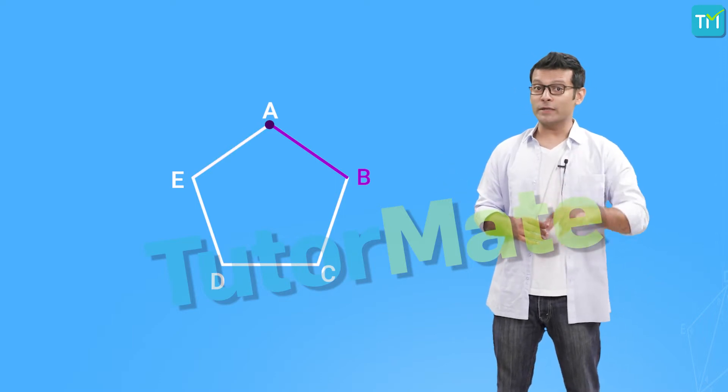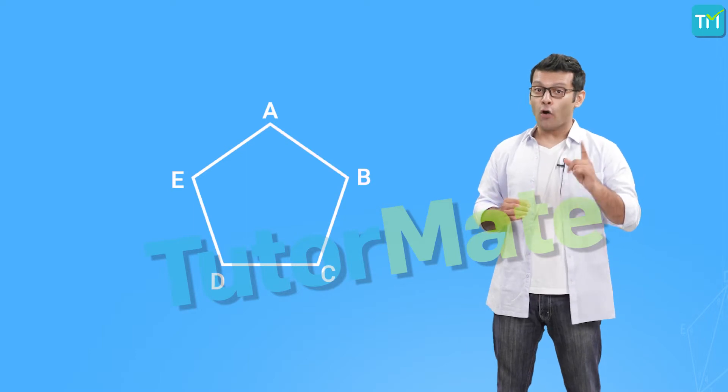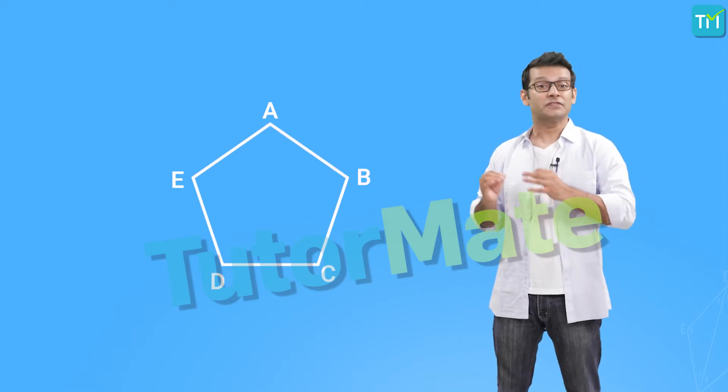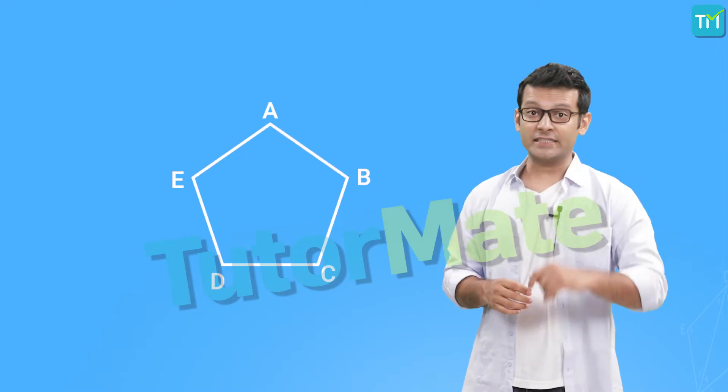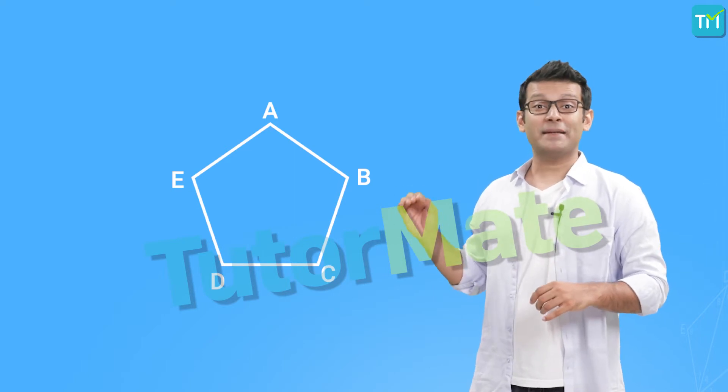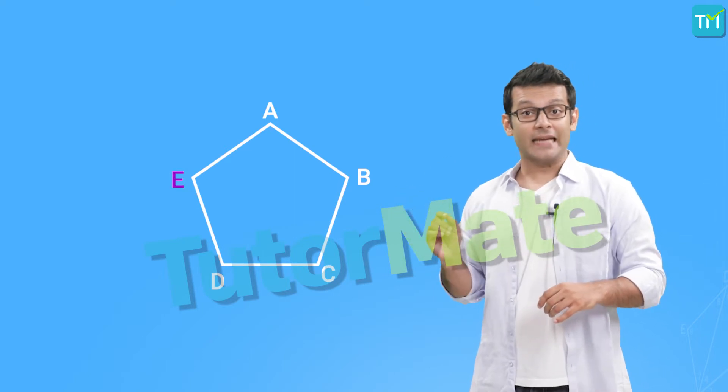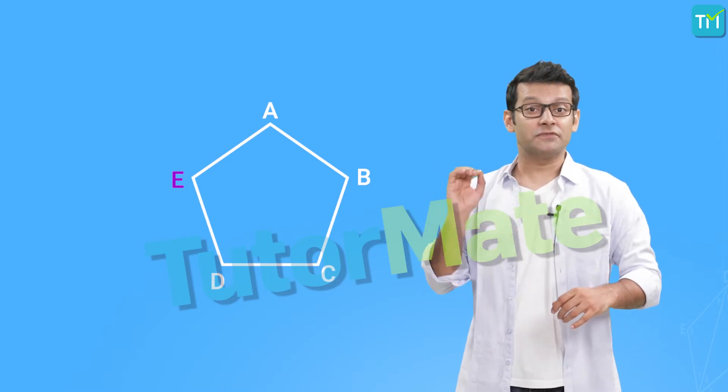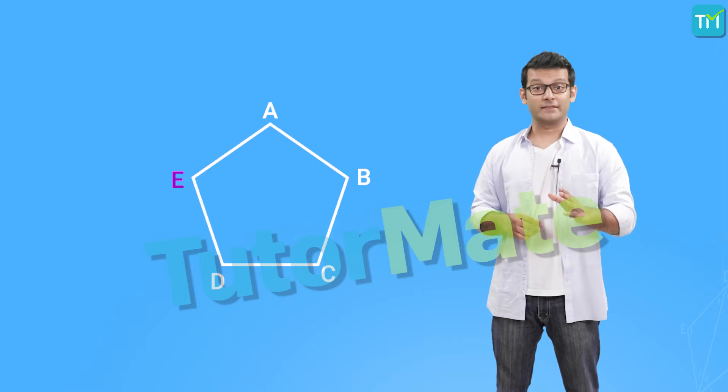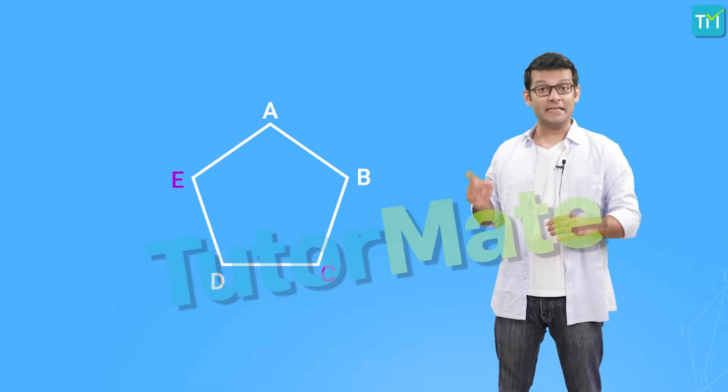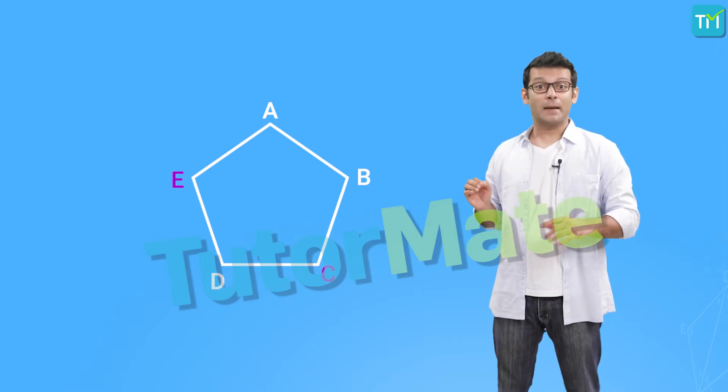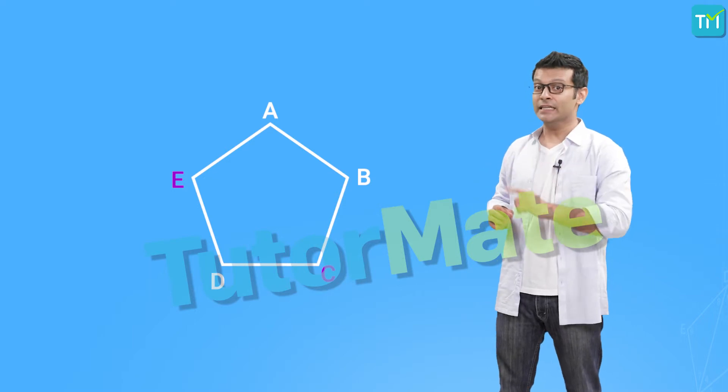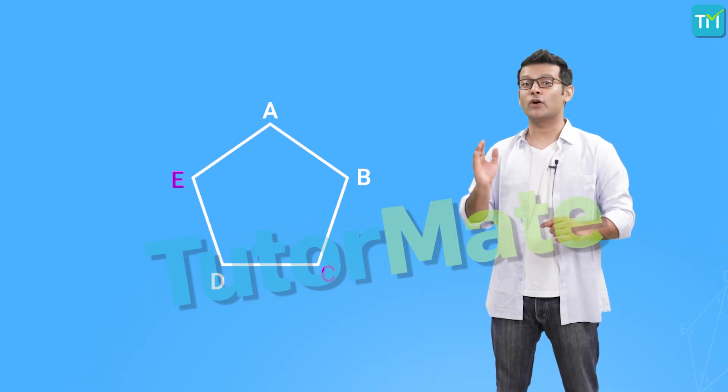Also, the two endpoints of the same side of a polygon are called adjacent vertices. In this case, the endpoints of segment DE are D and E. So, D and E are called adjacent vertices. But, we cannot say C and E are adjacent vertices because C and E don't lie on the same side of the polygon.